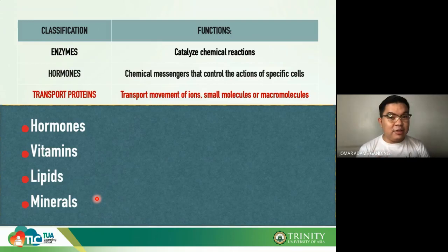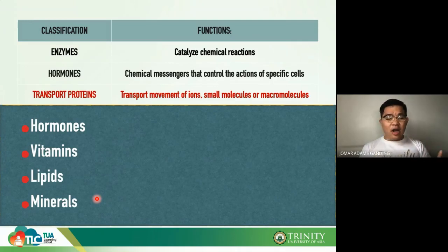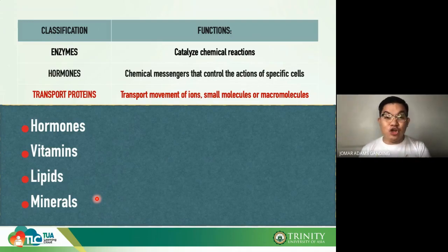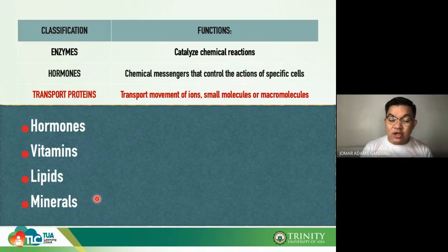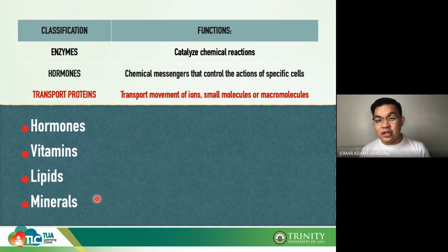Hormones that are fat-based or lipid-based, and fat-soluble vitamins — vitamins A, D, E, and K — cannot freely move around in your plasma, so they need transport proteins. Lipids are insoluble in water, which is why they need lipoproteins.